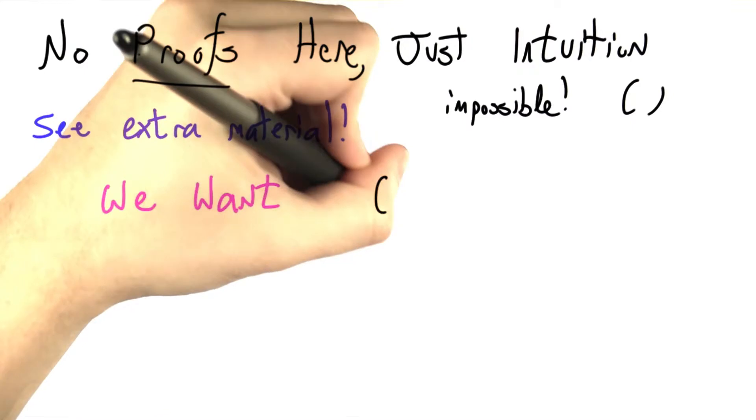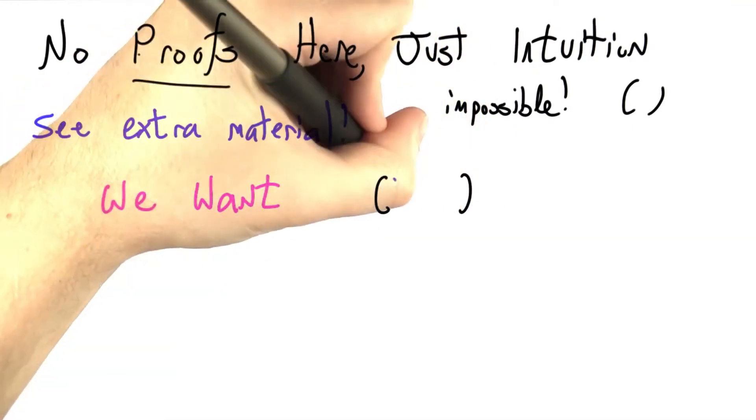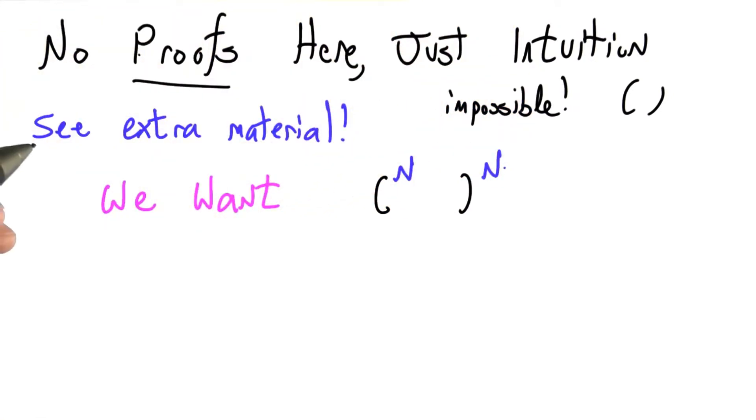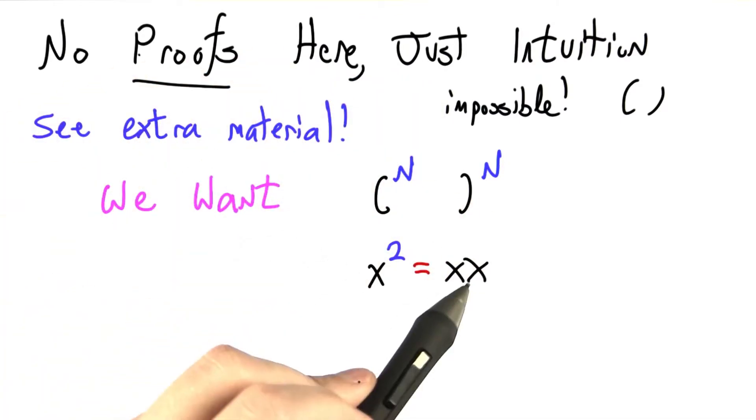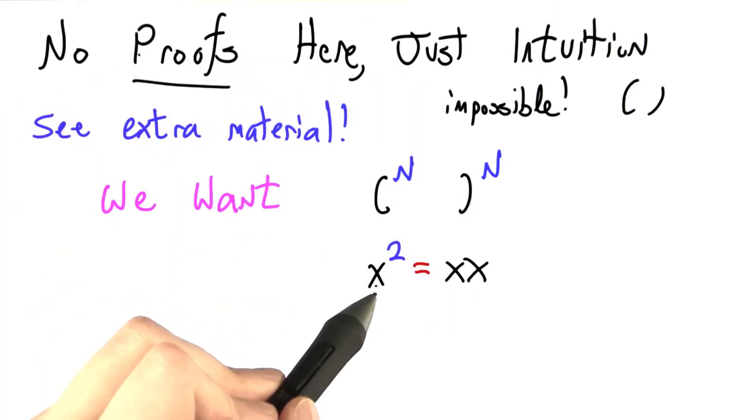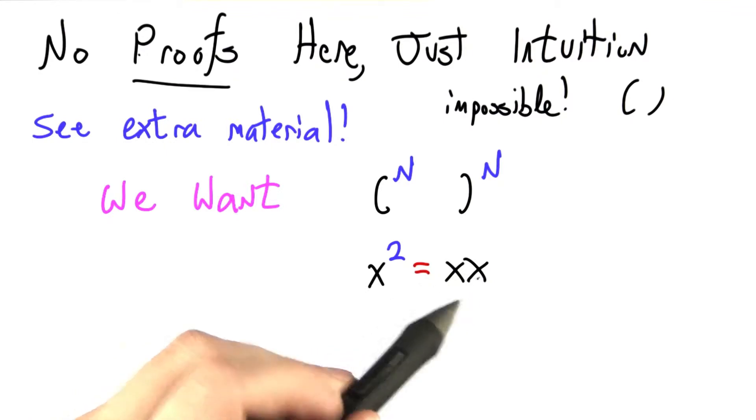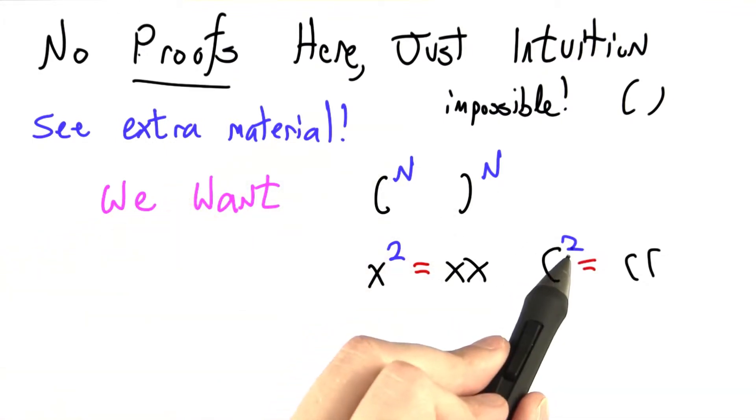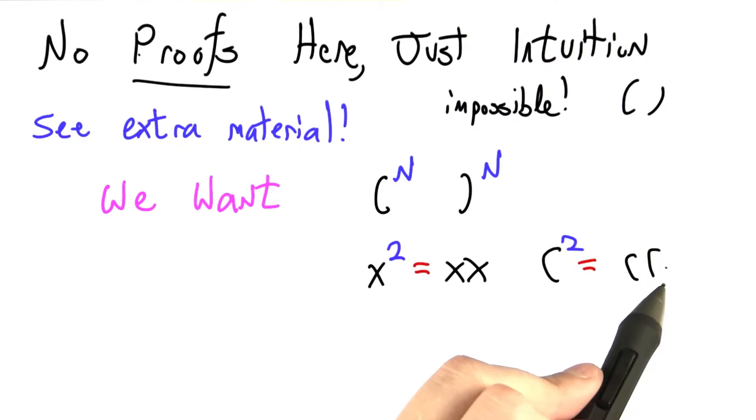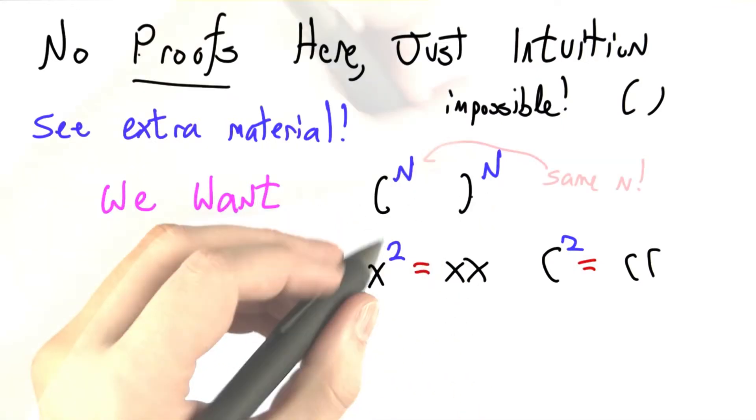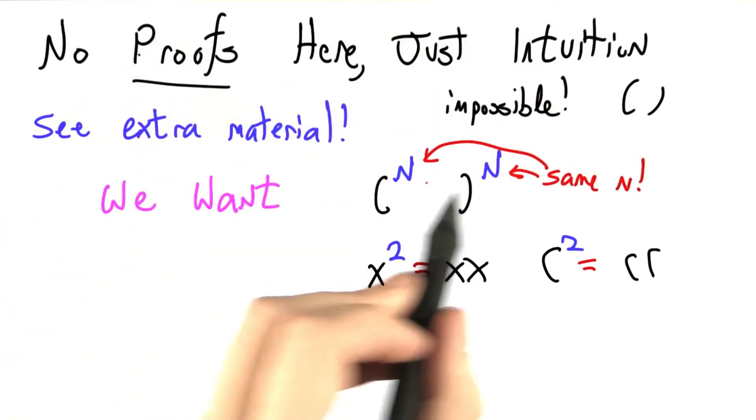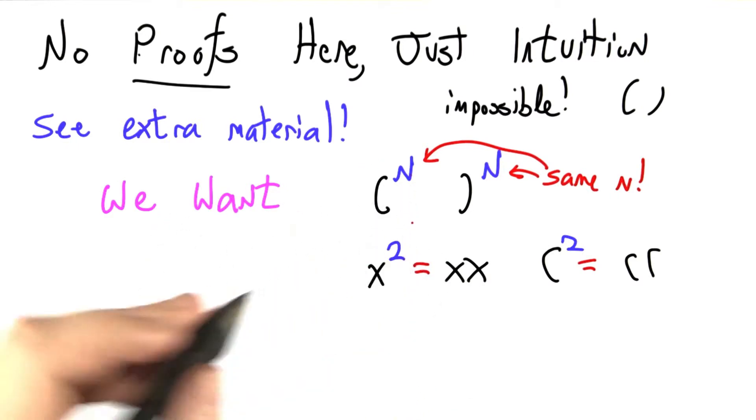Here's what we want. An open parenthesis followed by a closed parenthesis, each repeated the same number of times. And this intuition or this notation is meant to remind you of mathematics. x squared is just x times x, so open parenthesis raised to the power of 2 would just be two open parenthesis next to each other in a string. So what we really want is open parenthesis to the power of n, close parenthesis to the power of n. But this has to be the same n in order for the parentheses to be balanced.